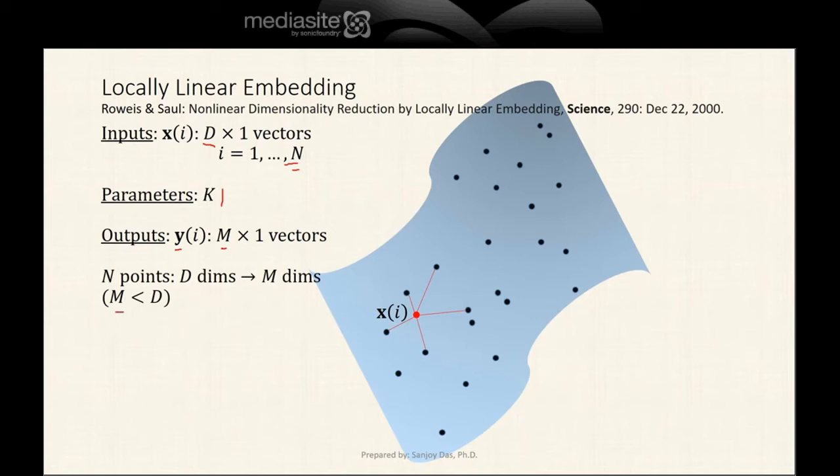These n sample points of d dimensions were converted to, again, n sample points—one per sample—which are now of m dimensions, a low dimension compared to d. This is what LLE does.